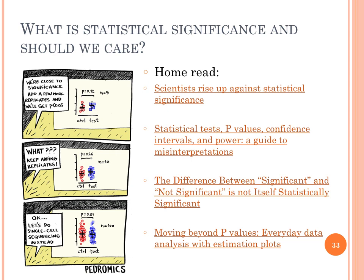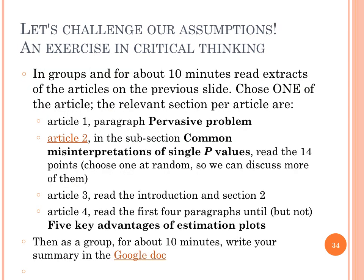We have now shaken our understanding of statistical significance a bit. Let's check it some more and see if there are alternatives. These four papers, whose links are in the Canvas announcement, are excellent home reads to complement this lecture. These were raised by scientists worried by the abuse of statistical significance by the scientific community. The communiqué strip on the right sadly describes a not-so-uncommon situation. In groups, and for about 10 minutes, read extracts of the articles on the previous slides. Choose one of the articles — the relevant sections per article are described on the present slide. After 10 minutes, for another 10 minutes, write your group observations in the common Google Doc, the link of which is also in the announcement. Now pause this video and resume in 20 minutes.